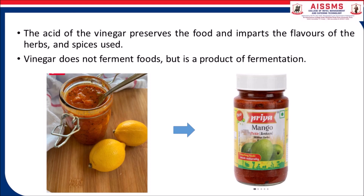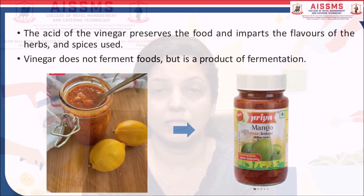The pH of the particular food is brought down to as low as 3 on the pH scale so that unnecessary microorganisms do not grow. Vinegar does not ferment the food but it is a product of fermentation. If you read the ingredients on a pickle bottle, you will see how the pickle has been formed and how it can maintain its shelf life. There is a large amount of preservatives — salt, sugar, or vinegar — added to maintain its shelf life.